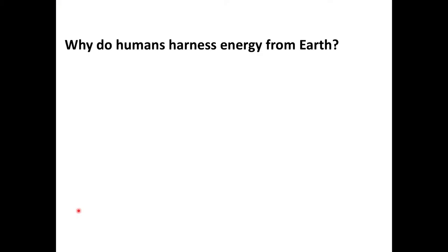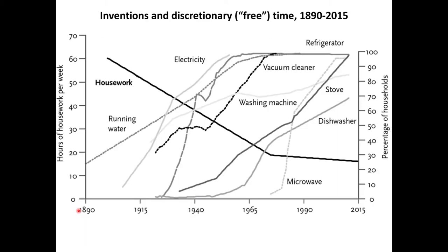So this was the question posed at the beginning of the last lecture: why do humans harness energy from earth? I showed you a figure from a book where the amount of hours we spend per week doing housework has decreased significantly — from roughly 60 to closer to 20 hours per week over the last hundred years — and that is in large part due to access to electricity.